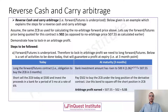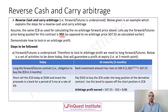Now let's understand a reverse cash and carry arbitrage. The related concept here is that forwards and futures are underpriced. We'll use the same example of the zero coupon bond, only the quoted price for the forwards or futures is different — it is quoted as 502. We can see that 502 is lower than 507.55.